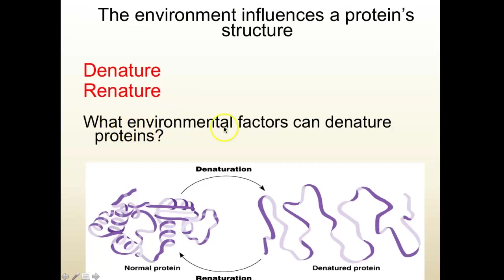What environmental factors can denature proteins? That's temperature — specifically heat; adding a high temperature can denature proteins. A change in pH — either acid or base, if you change the pH too much, you can denature the protein. And a change in salt concentration. So proteins are vulnerable to their environment, and you can definitely destroy proteins.